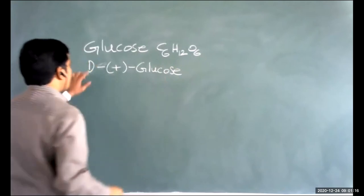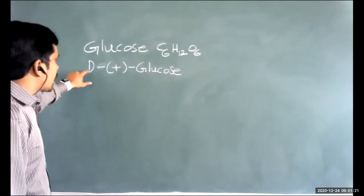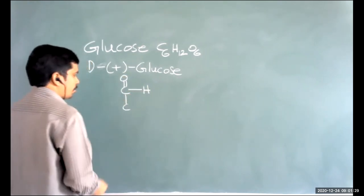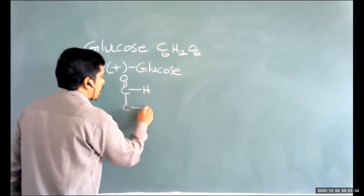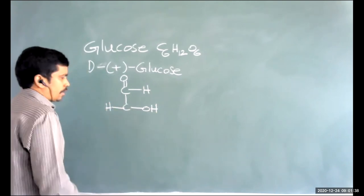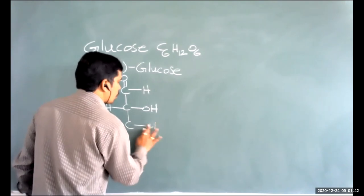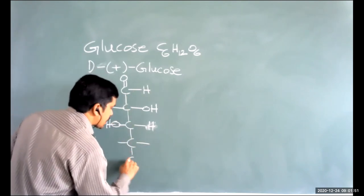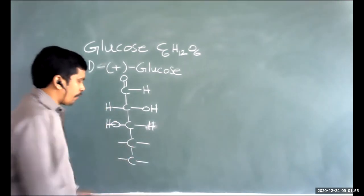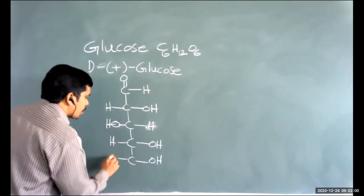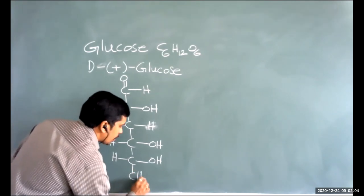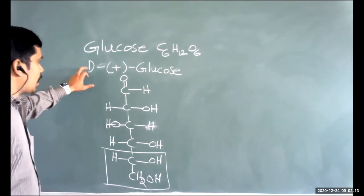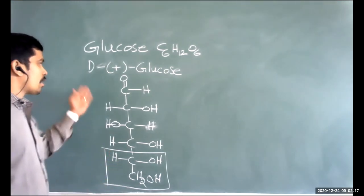The D configuration indicates relative configuration similar to D-glyceraldehyde. The open chain structure of D+ glucose has an aldehyde group at C1 (C=O-H), OH on the right at C2, OH on the left at C3, OH on the right at C4 and C5, and CH2OH at C6. The capital D means the configuration resembles D-glyceraldehyde.